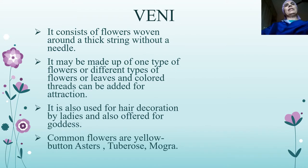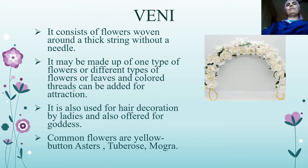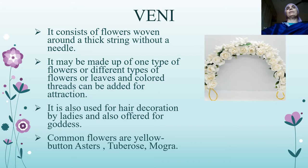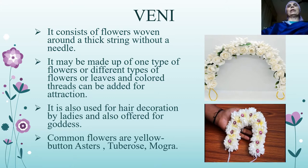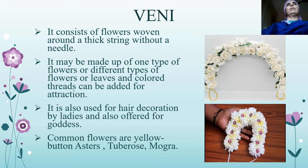Another style of Indian flower arrangement is veni. It consists of flowers woven around a thick string without a needle. It may be made up of one type of flowers or different types of flowers, and leaves can also be used. Colored threads can be used for attraction purposes. It is also used for hair decoration by ladies and is offered to goddesses. Common flowers used are yellow button, asters, tuberose, mogra, etc.